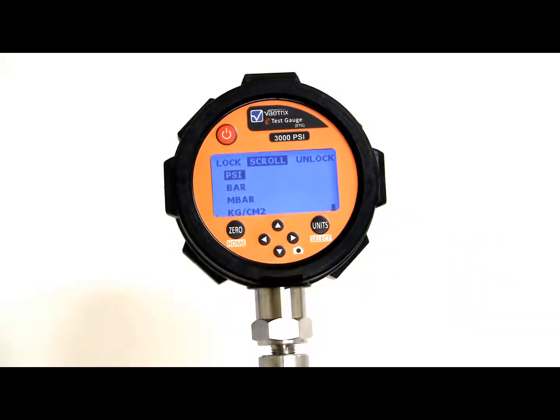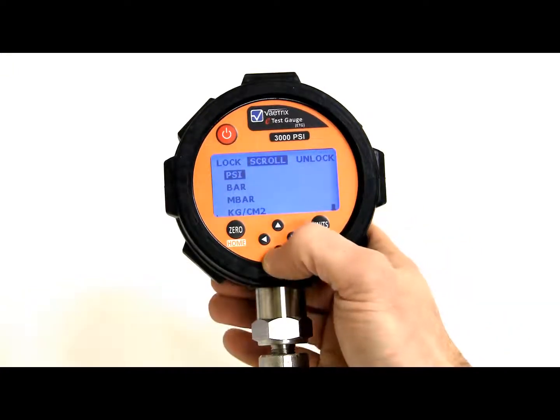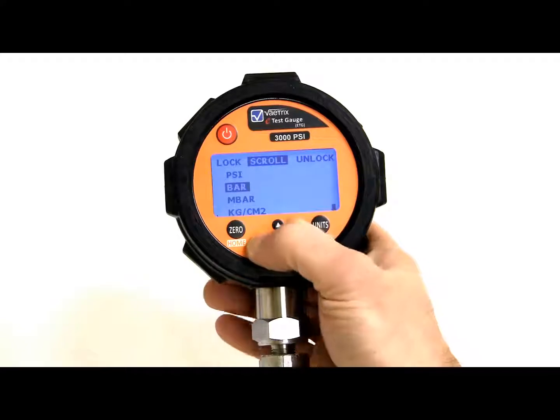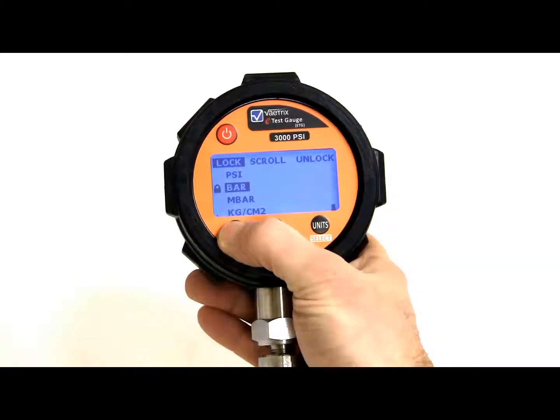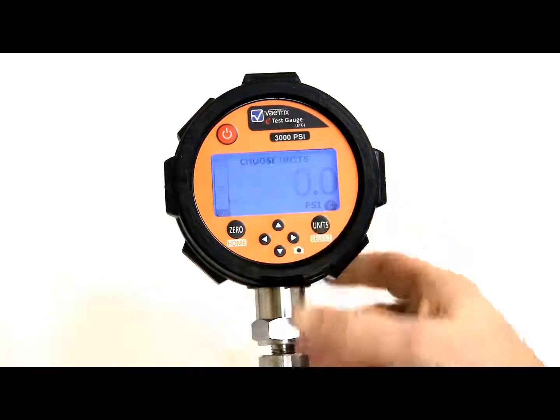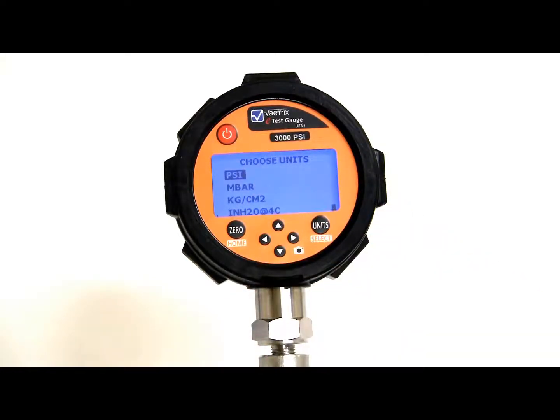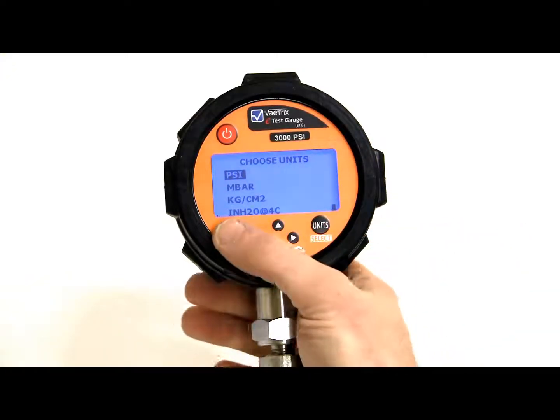Now, a neat feature that we put in, say you didn't want to scroll through all 26 units, or you just wanted to concentrate on a couple, I can lock each unit. So if I didn't want to see bar, I can lock that. Right now, so if I go back home, and now if I scroll through, bar is gone. So you can basically truncate the menu if you wanted to just focus on a couple units, you don't want to hit down 26 times, it's a neat way to make it easier for the operator.